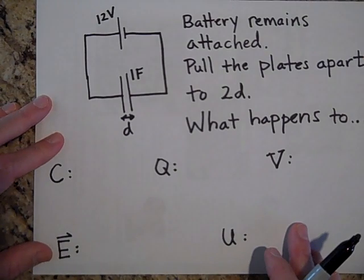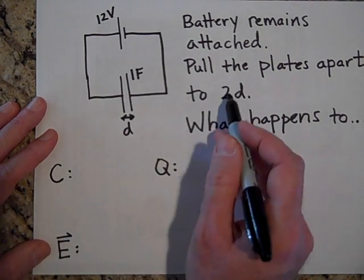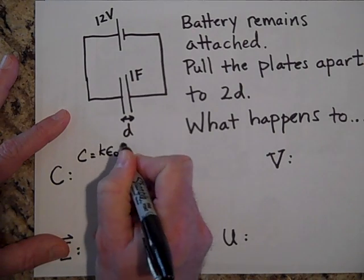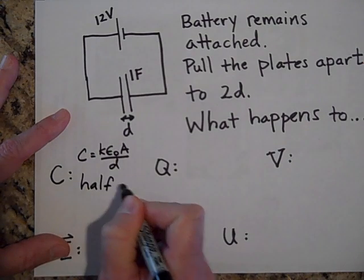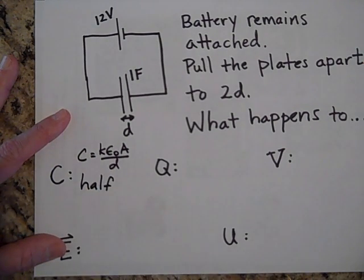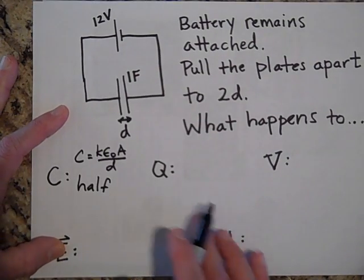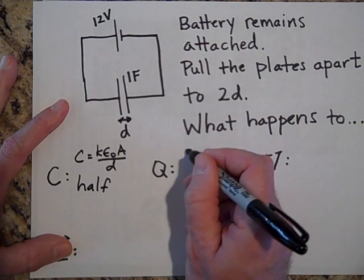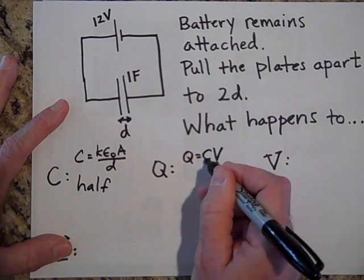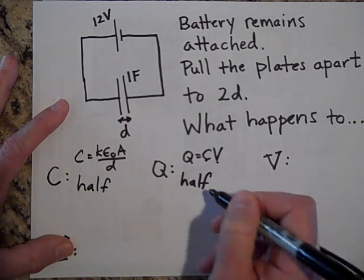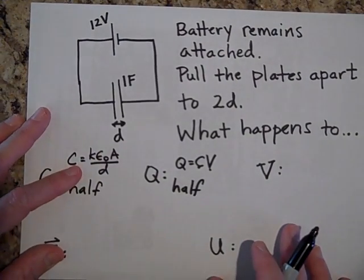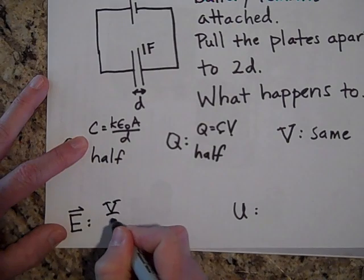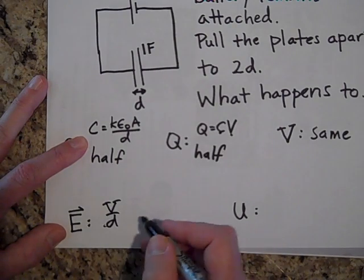What happens to the capacitance when you pull the plates apart by a factor of two? Using C = kε₀A/d, putting a two in the denominator means capacitance halves. Because it's hooked up to the battery, the voltage stays the same. Since Q = CV and C is halved, the charge also halves — some charge returns to the battery. The voltage stays the same, and since the electric field is voltage over distance and d is now twice as large, the electric field is half.